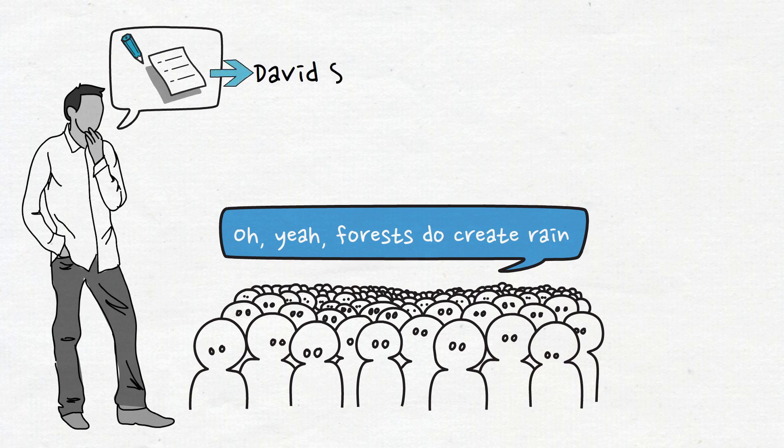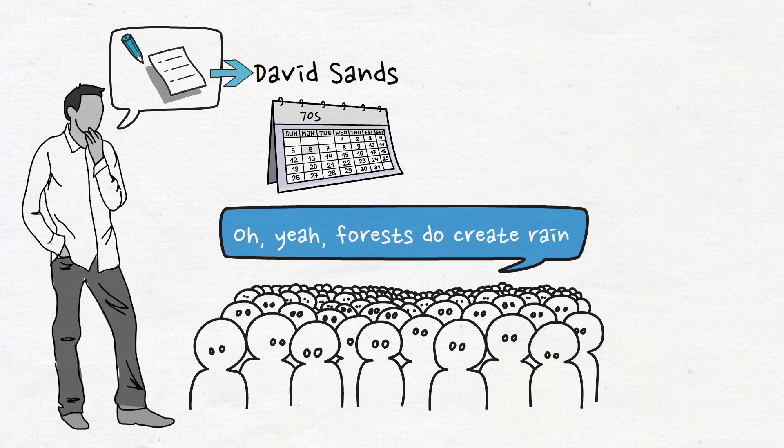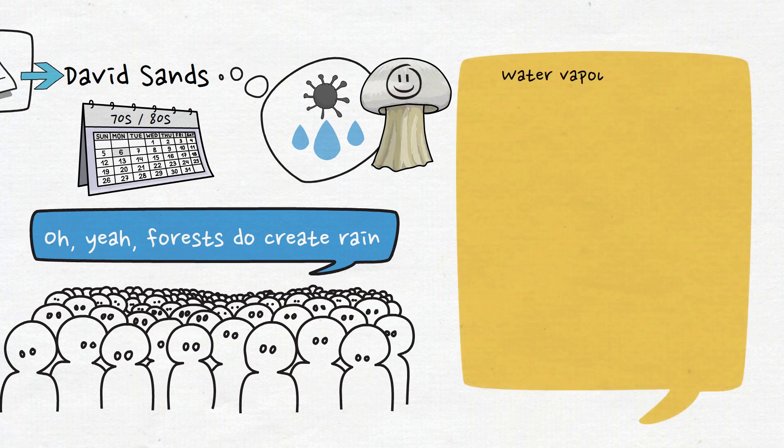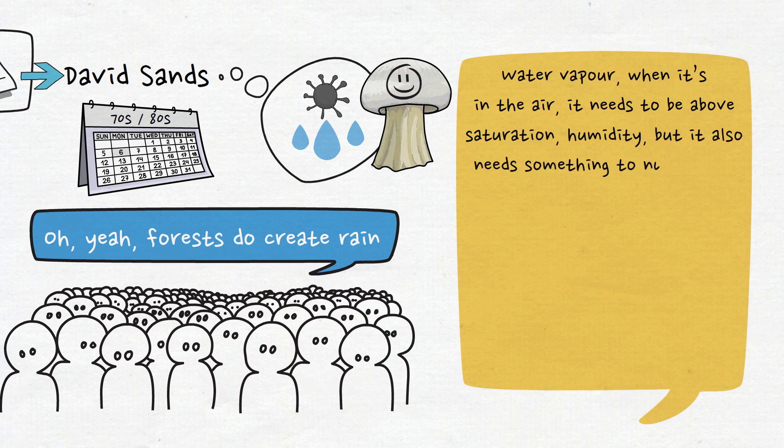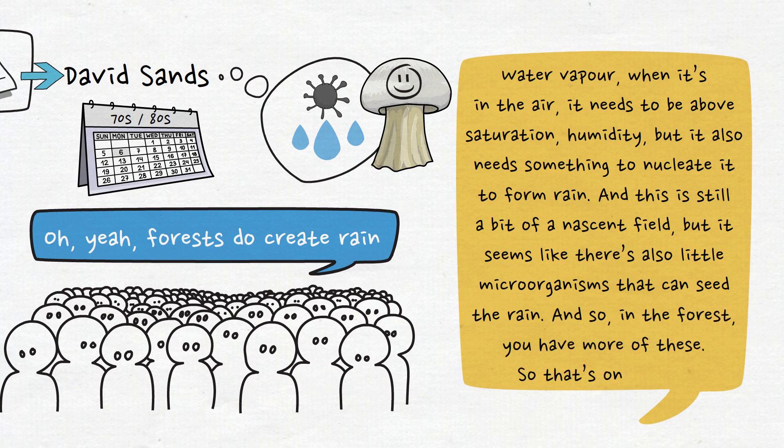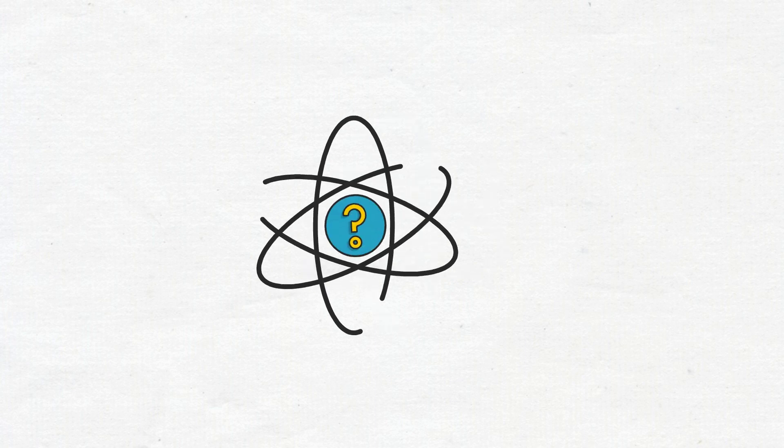David Sands discovered, I think in the 70s or 80s, that bacteria could float up in the air and actually seed rain. Then people discovered that fungi spores could too. Water vapor in the air needs to be above saturation humidity, but it also needs something to nucleate it to form rain. This is still a nascent field, but it seems like there are little microorganisms that can seed the rain, and in the forest you have more of these. That's one aspect, but people weren't connecting it.